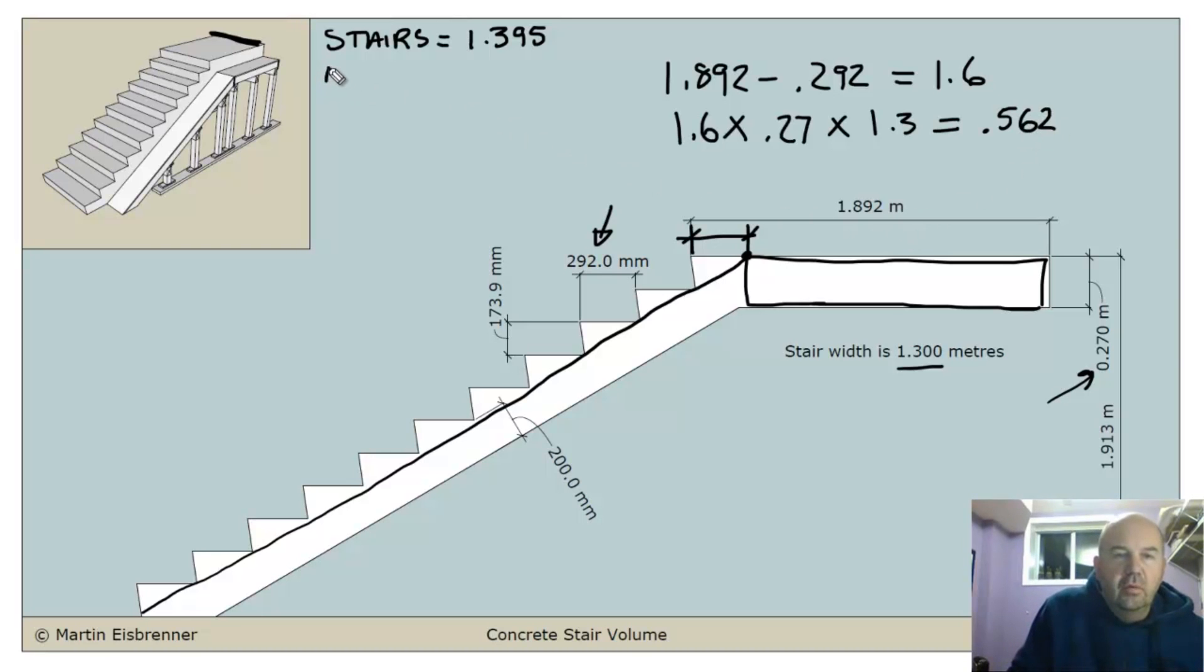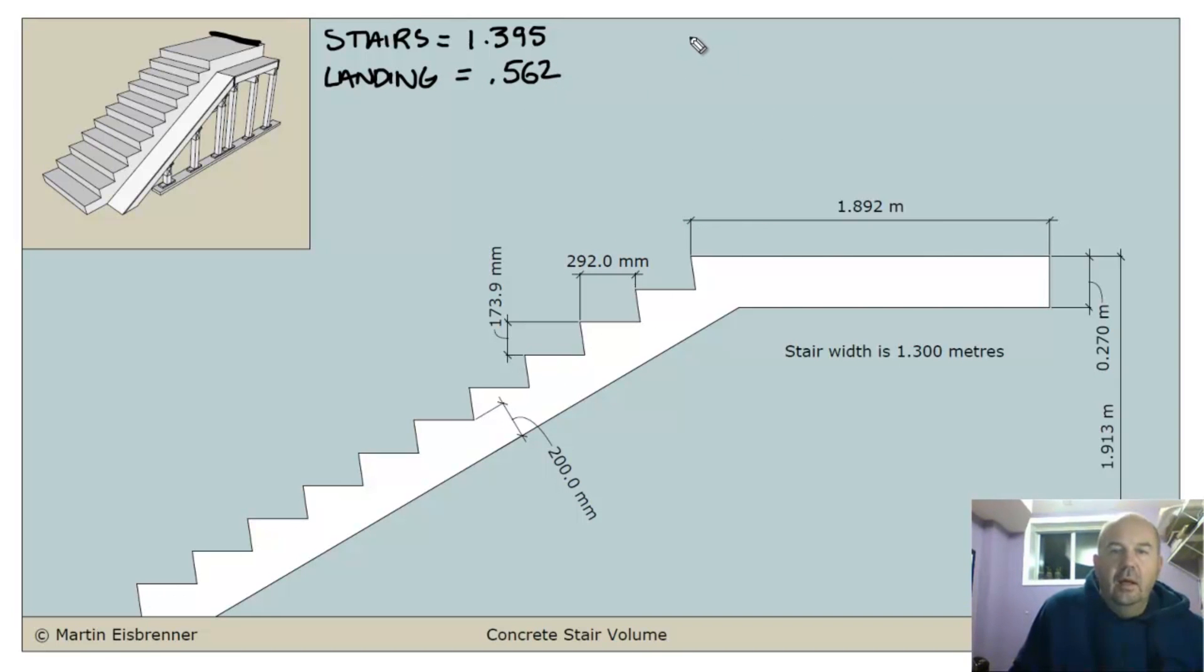And that is equal to 0.562. Perfect. So landing volume is equal to 0.562. I'm going to add these together. 1.395 plus 0.562 is equal to 1.957 cubic meters. And that's very close to the exact volume of these stairs. Certainly, it's close enough to order concrete.